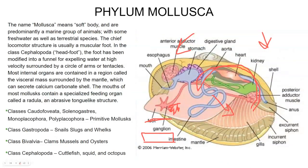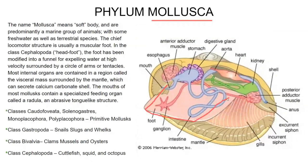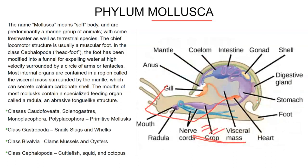Here we can see a clam — we can still see the big foot characteristic of mollusca. They can stick the foot outside of their shell if they need to move around. They do have a mouth separate from their anus. Here you can see the mantle that produces the outer shell. They are all going to have gills — even land snails are going to have gills to help them breathe, needing availability to oxygen. Land snails have modifications to help keep this moist for maximum oxygen absorption.